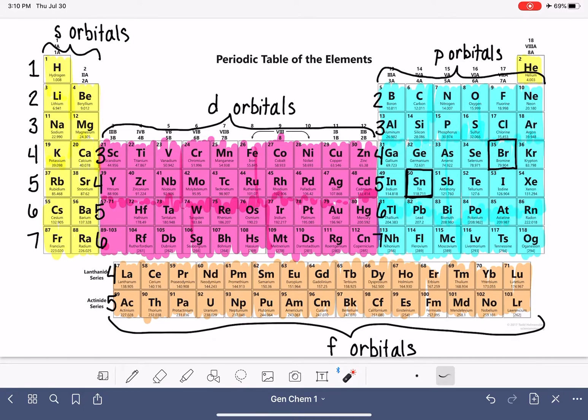So I do want you to notice that when we shift from s to d, we do like drop the numbers down like this. So we go 4s, 3d, 4p. And then after that, we go 5s, 4d, 5p.